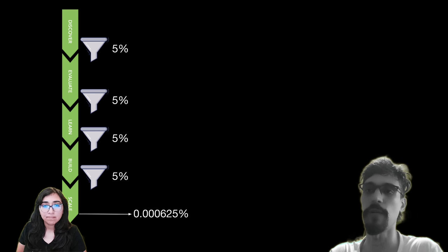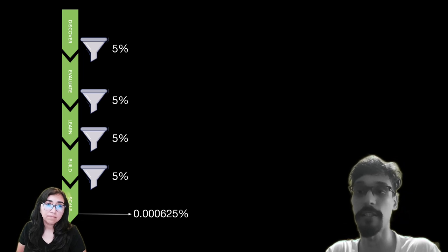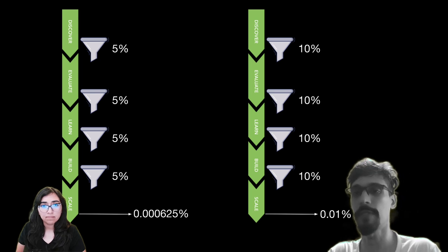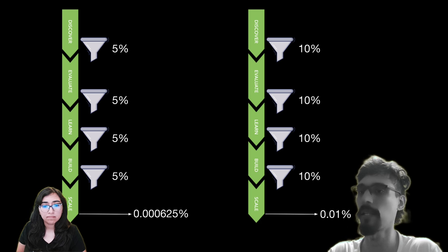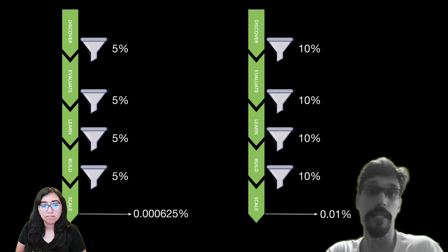Let's reorient those stages and think about the developer journey as a series of funnels, each of which has its own conversion rate, meaning that only a percentage of developers in one stage will move on to the next. If all stages have a conversion rate of 5%, we end up with a vanishingly small number that actually makes it through to the end. If instead we have a 10% conversion rate throughout, we have a small number making it to the last stage, but it is a significant improvement. The point is that improving this conversion rate has a compounding effect, so it is very high reward.